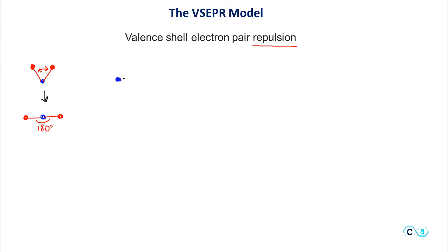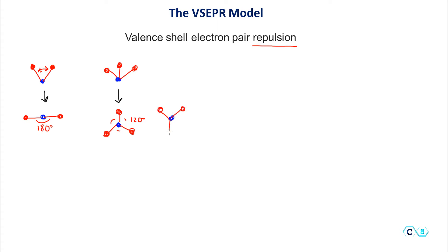What if we have three units connected to the central unit? We put one, two, and three around it. How can we arrange them to be as far away from each other as possible? For three units, we put the central unit in the middle and place the other three at 120 degrees — one on top and two on the sides. All lengths are the same and all angles are 120 degrees. This can be shown in any orientation.